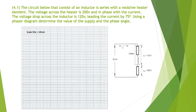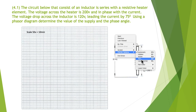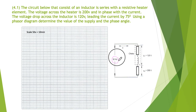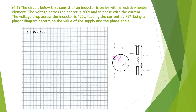Here's our first problem, 4.1. The circuit below consists of an inductor in series with a resistive heater element. The voltage across the heater is 200 volts and in phase with the current. The voltage drop across the inductor is 120 volts, leading the current by 45 degrees. We do have a 50 hertz supply, but we do not know its size or its angle.